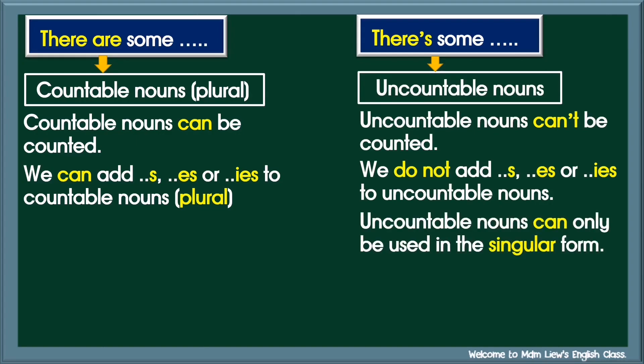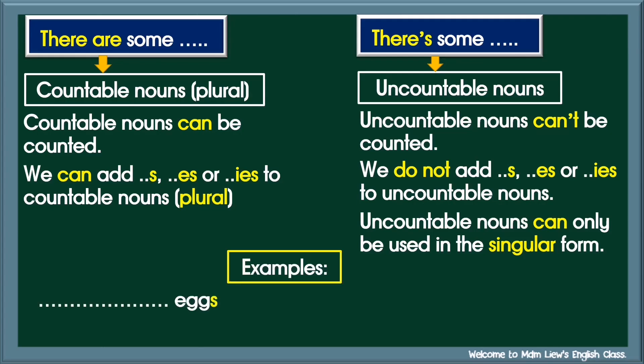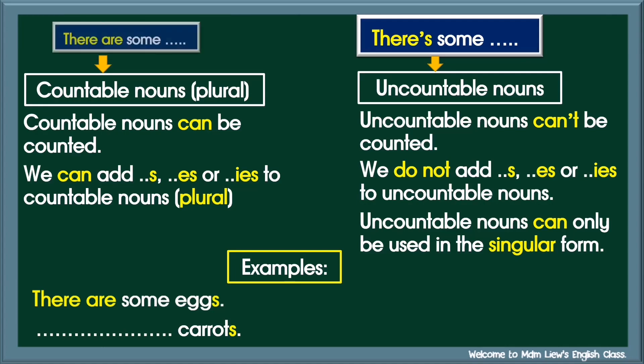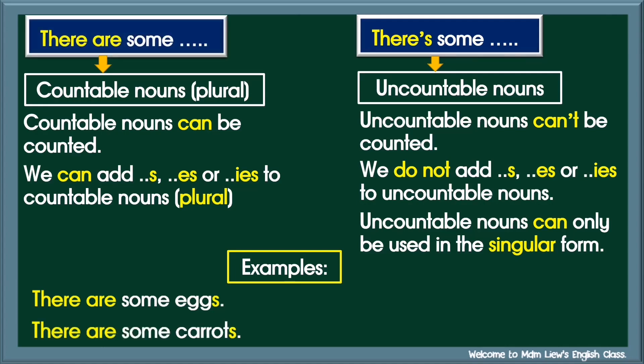Uncountable nouns can only be used in the singular form. Let's take a look at some examples. One, eggs — countable nouns in the plural form. So, use the phrase there are some. There are some eggs. Two, carrots — countable nouns in the plural form. So, use there are some. There are some carrots.